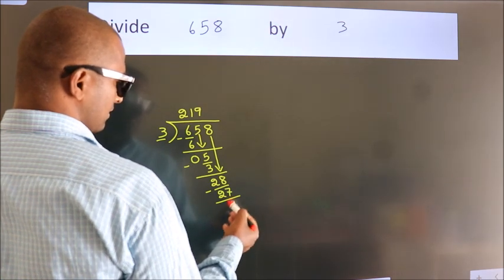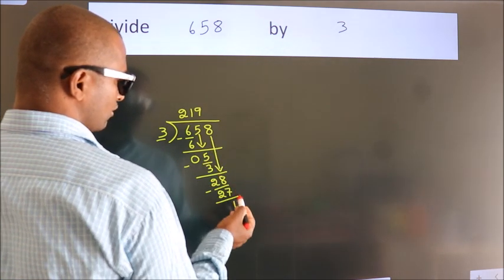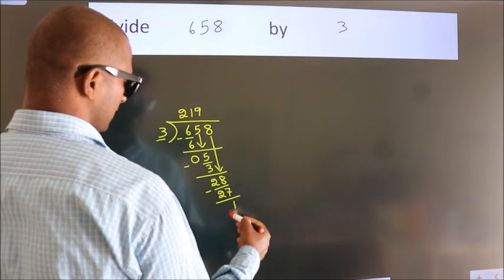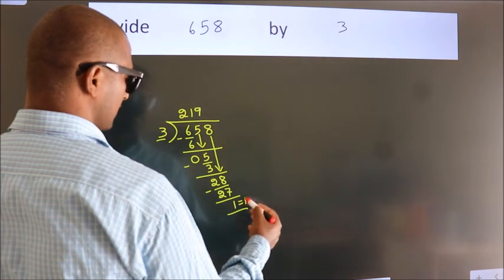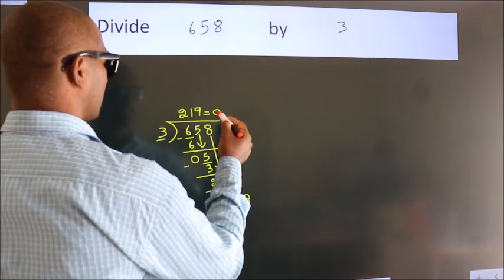After this, no more numbers to bring it down, so we stop here. This is our remainder, this is our quotient.